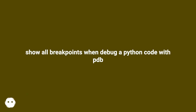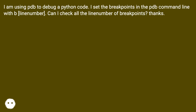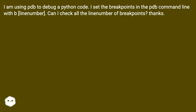Show all breakpoints when debugging a Python code with pdb. I am using pdb to debug a Python code. I set the breakpoints in the pdb command line with b, followed by a line number. Can I check all the line numbers of breakpoints? Thanks!